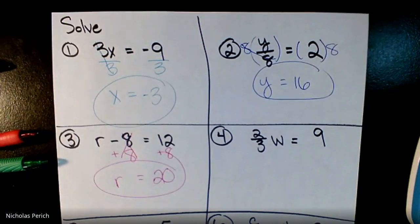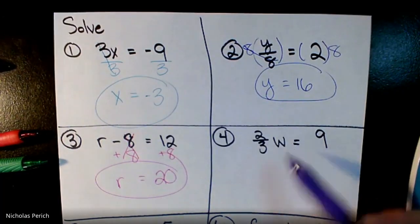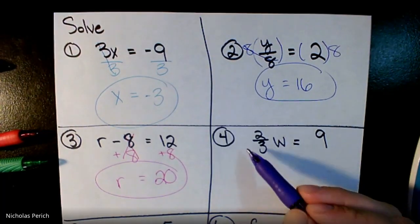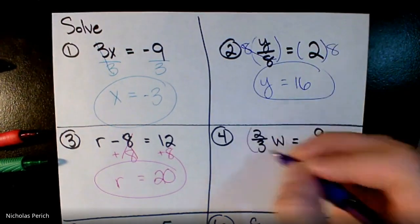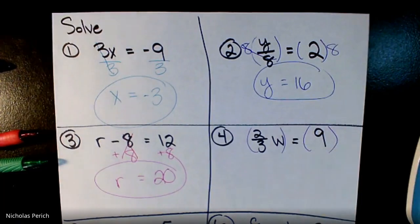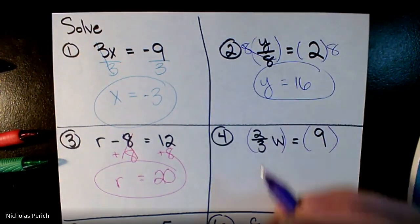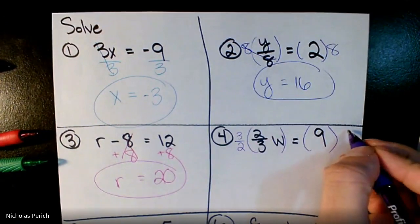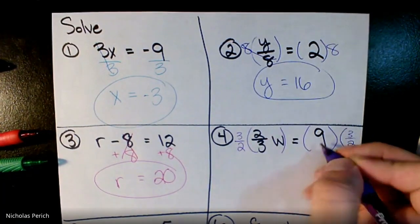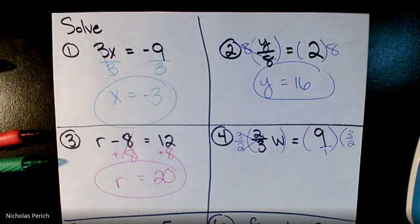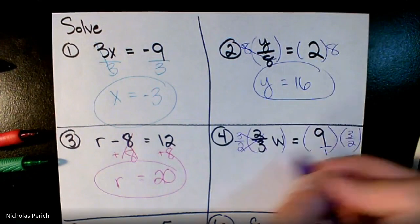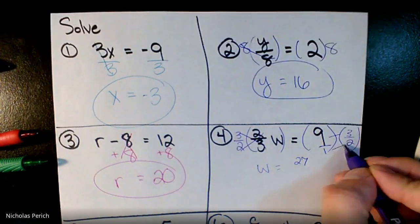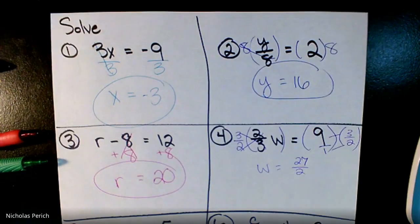I have two-thirds multiplied to w. Usually when I get rid of something being multiplied I divide, but instead of dividing a fraction, multiply by the reciprocal. The reciprocal of two-thirds is three over two, so I multiply everything by three over two. I'll treat nine as nine over one and multiply straight across: nine times three is 27, one times two is two — so w equals 27 over 2.